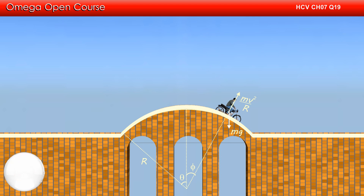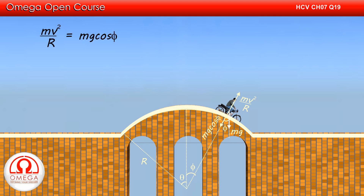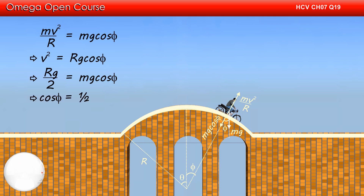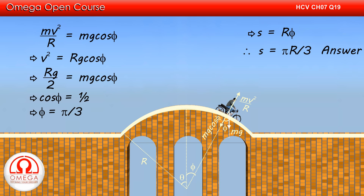Also, the centrifugal force is balanced by the component of gravity along the radius. From simple geometry, the gravitational force makes angle phi with the line joining this point to the center. Therefore, the component of gravity towards the center is mg cos phi. Thus MV squared by R equals mg cos phi, or V squared equals Rg cos phi. Putting V equal to V0 over root 2, that is root under Rg by 2, we get Rg by 2 equals Rg cos phi, so cos phi equals 1 by 2, which implies phi equals pi by 3. The distance of this point from the highest point is R times phi, or pi R by 3. This is the answer to part B.